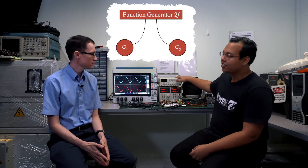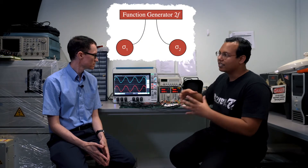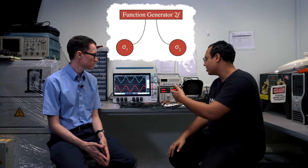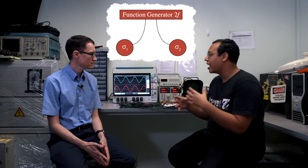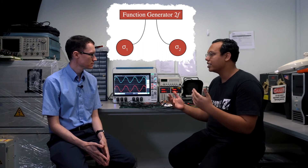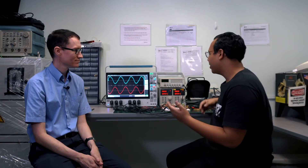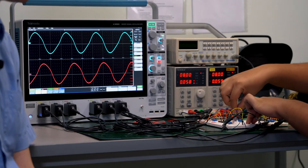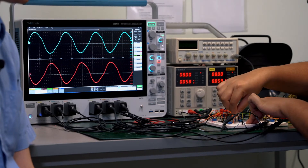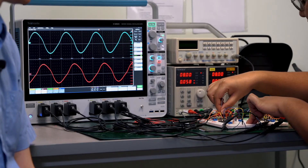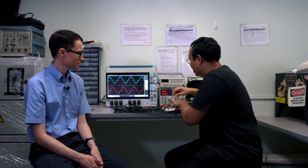We can use sub-harmonic injection locking. I'm going to use the signal generator here to create a signal that is twice the frequency of the oscillators. This will cause the two oscillators to either be in phase or out of phase with each other. But first, I need to remove the coupling between the two oscillators, and then I'm going to inject the 2F signal into the oscillators and turn on the signal generator.